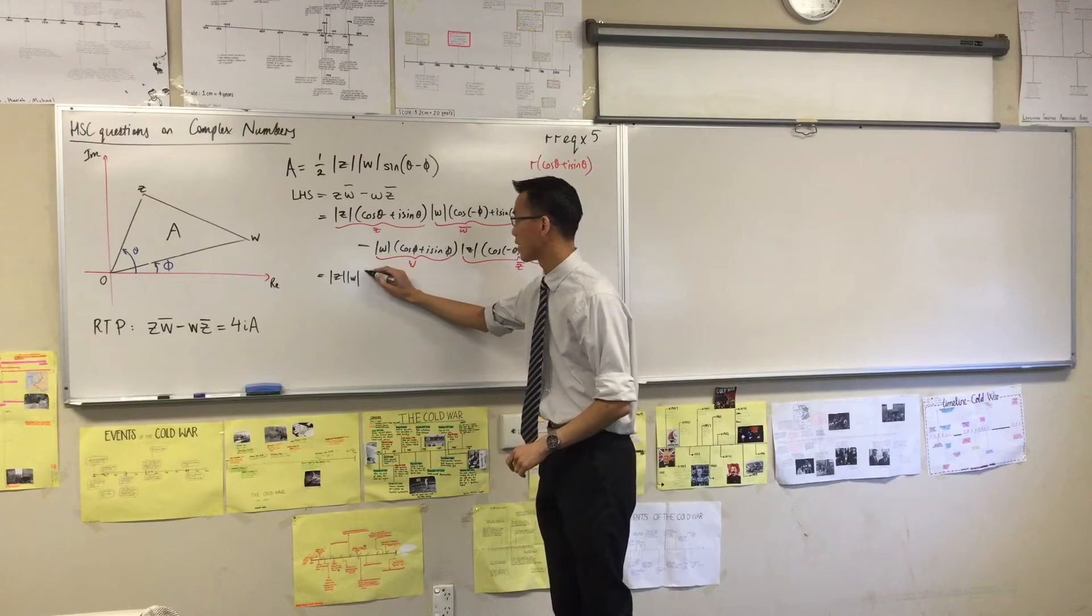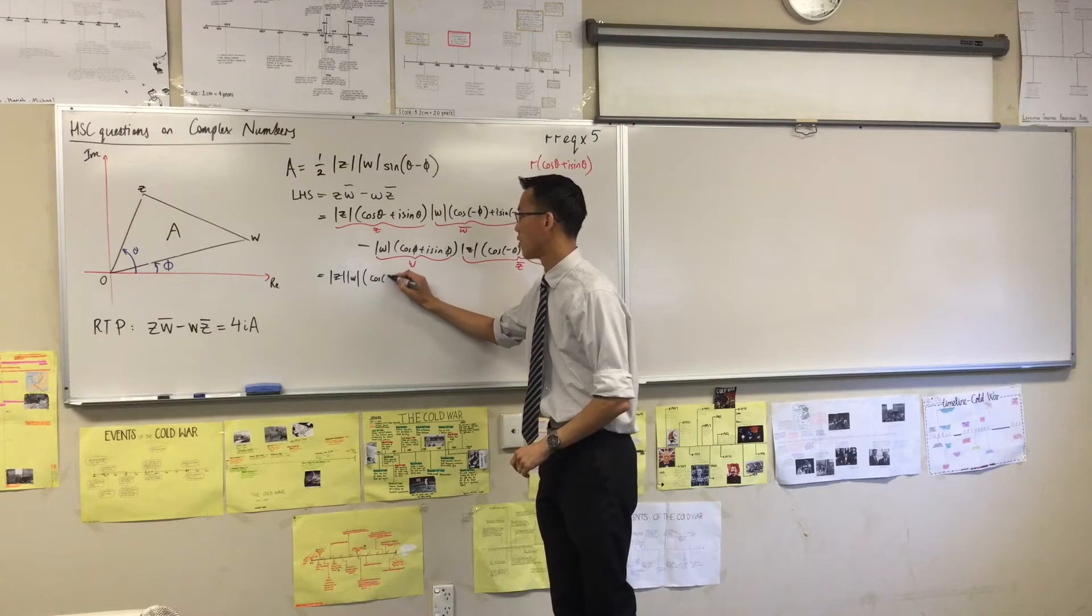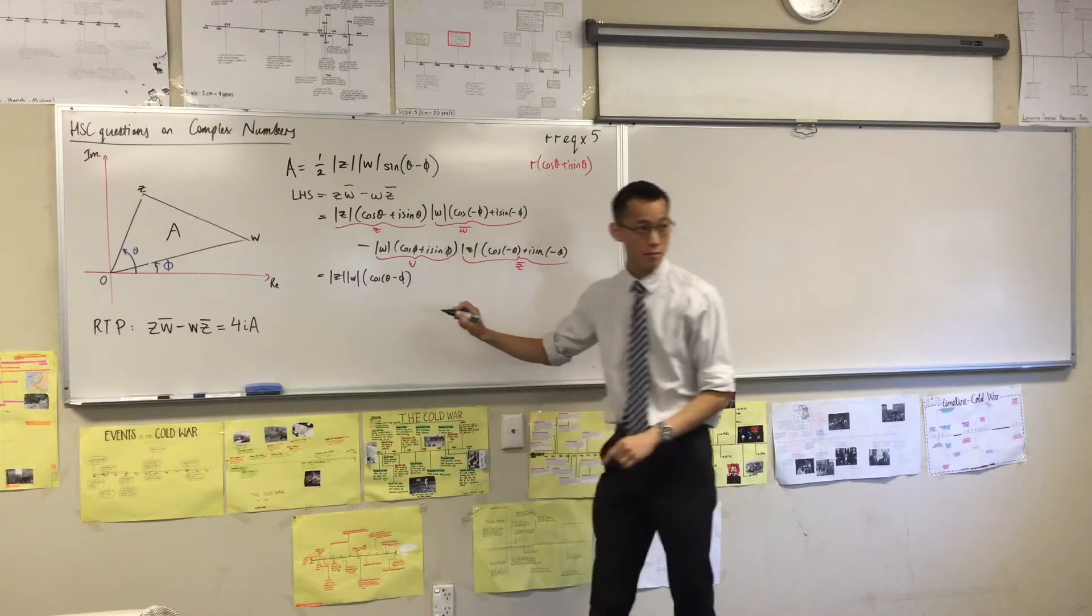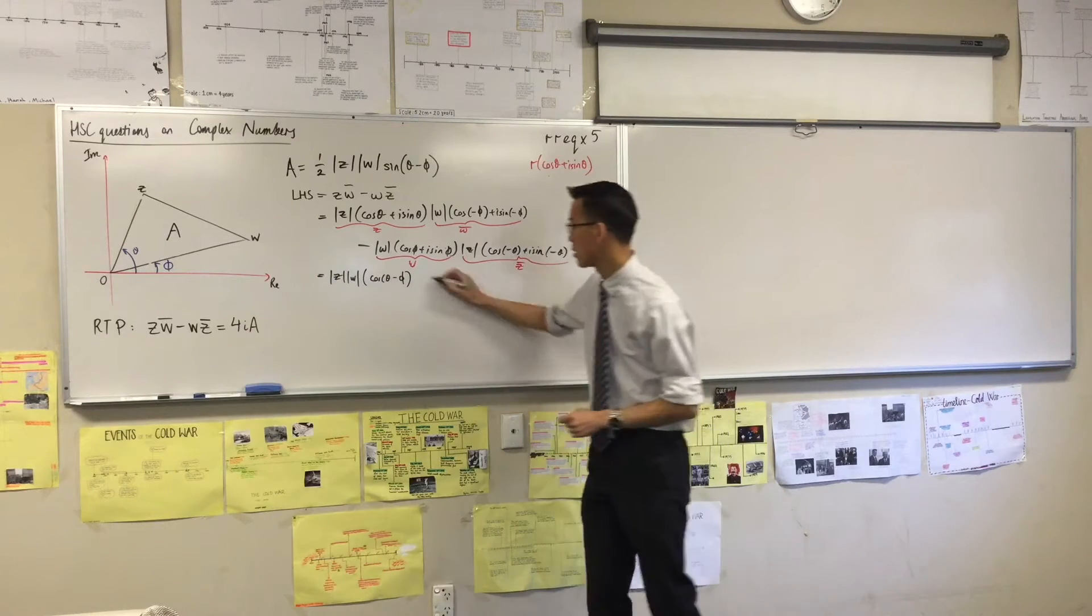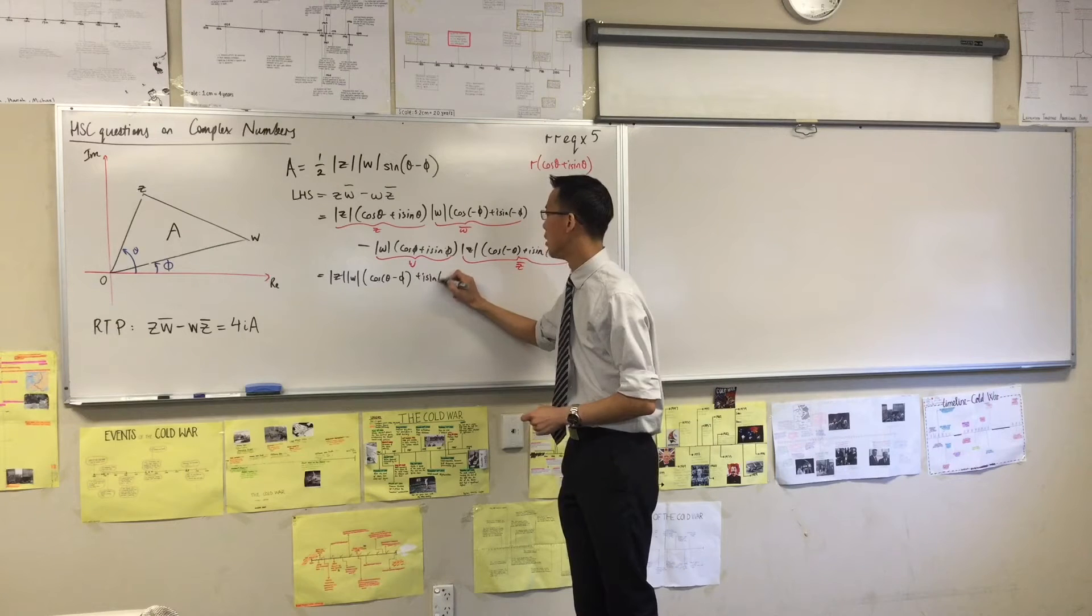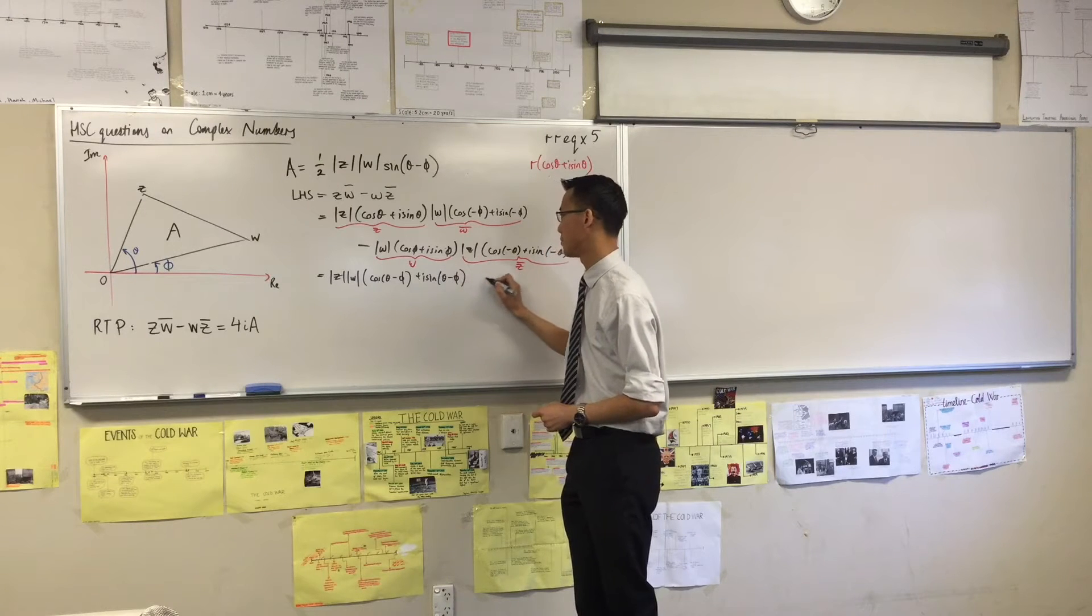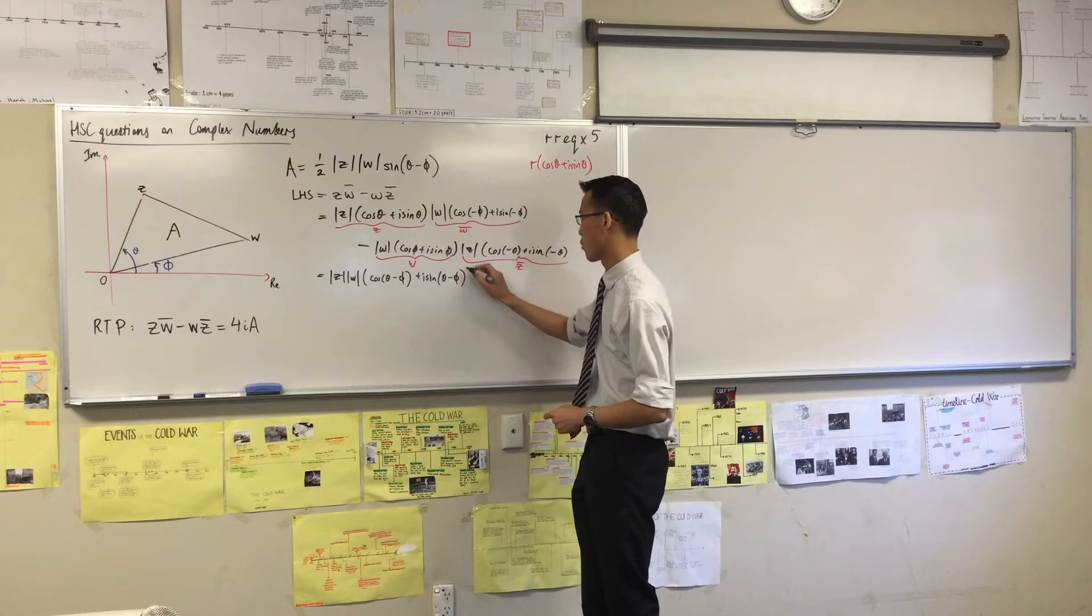So I've got here cos of theta minus phi, right? That's the sum of those angles. Plus i sine of theta minus phi. I think I need one more bracket. There we go.